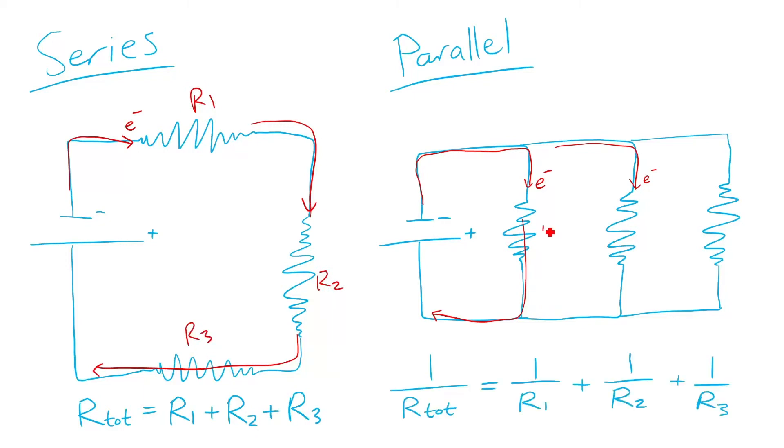But for a parallel circuit, we need to take the reciprocal of the resistance of each resistor, add them together, and then take that reciprocal to get the total resistance.